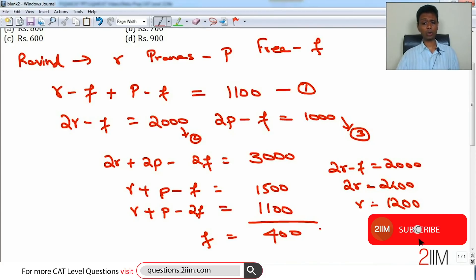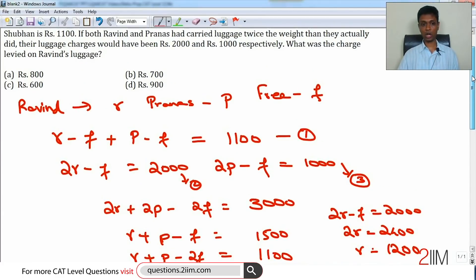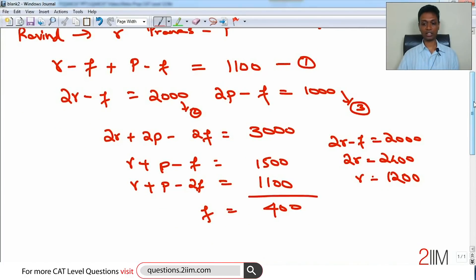We can find p also from here, but that's not what we are interested in. The question asks us what was the charge levied on Ravind's luggage. Ravind had carried equivalent of 1200, he gets 400 free, or he would have paid rupees 800.